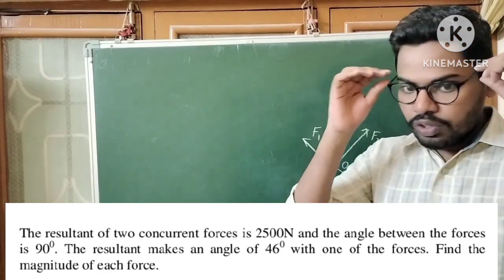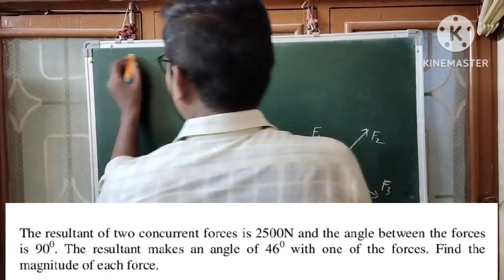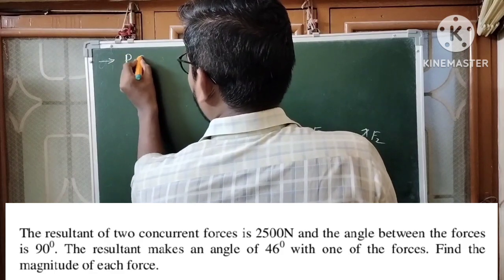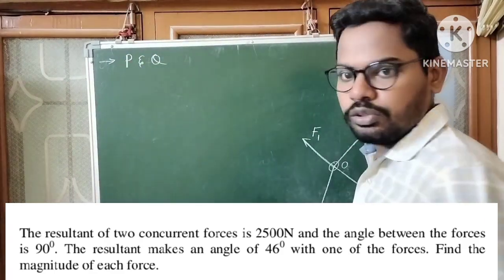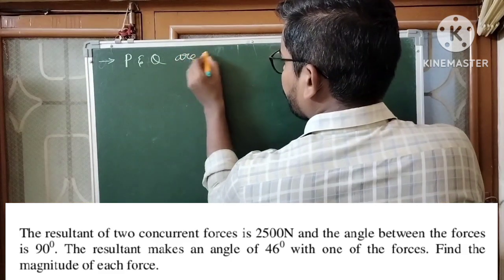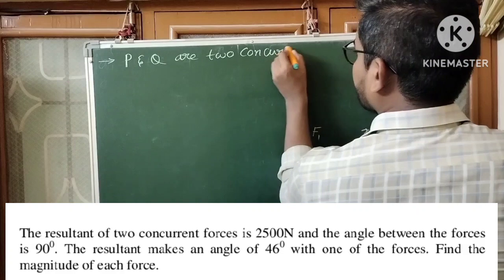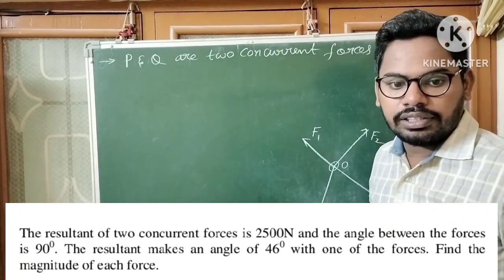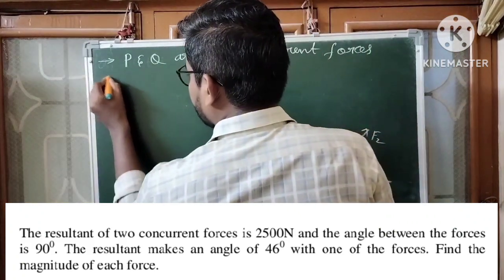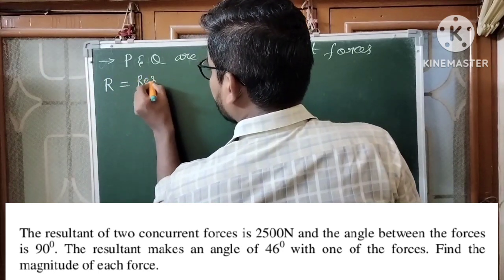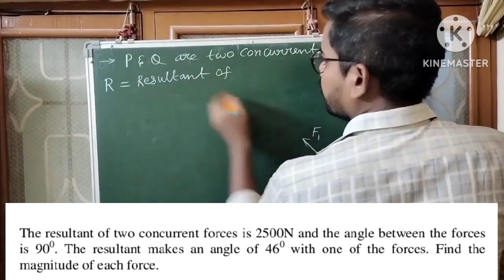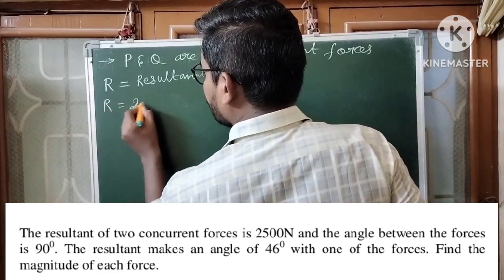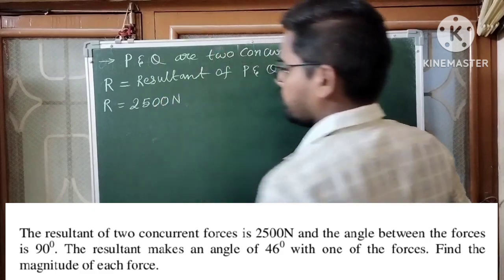The resultant of two concurrent forces is 2500 newtons. Let us consider two concurrent forces P and Q. The resultant of these two concurrent forces is R, and R is equal to 2500 newtons.